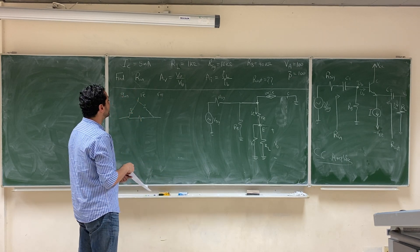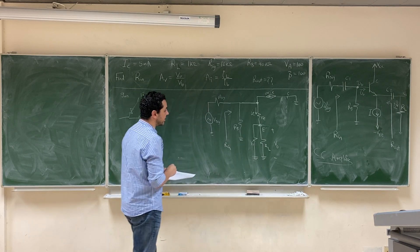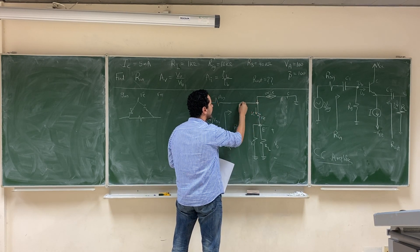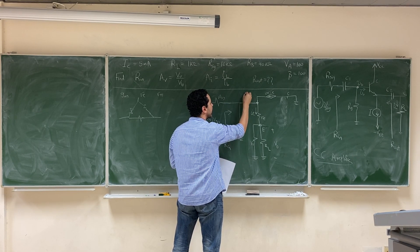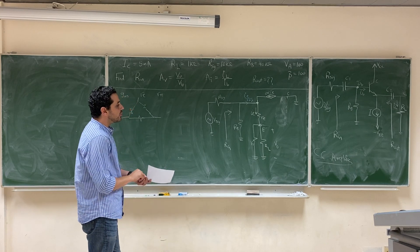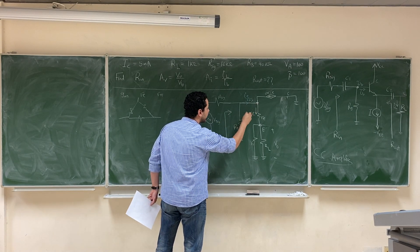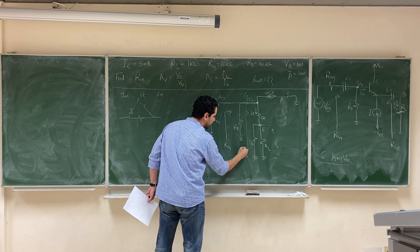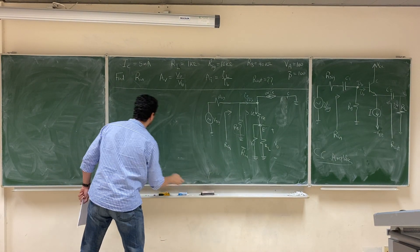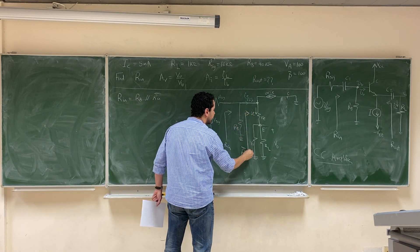Now the first thing we need is our input resistance looking at the base. Let's look at our input from here and try to compute it. Remember that if this is IE, the current at the base will be IE over (1+beta). R-input equals RB in parallel with whatever comes next — let's call it Rin-bar. So we can say that Rin equals RB parallel with Rin-bar, where Rin-bar is the input resistance looking after RB.